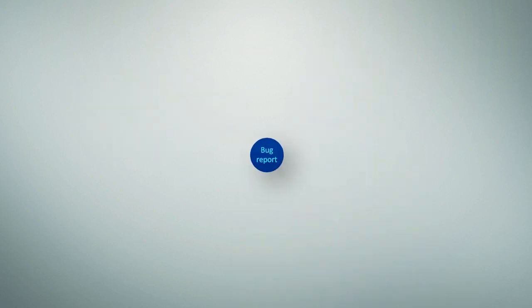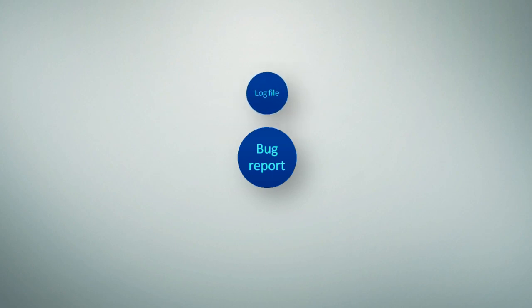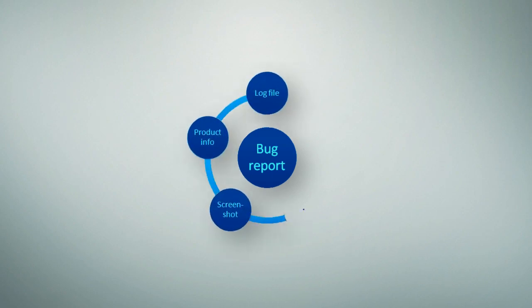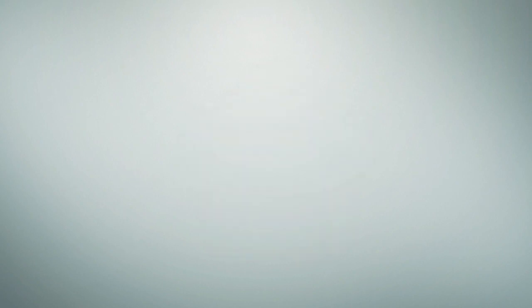Next, you should provide more details about the bug itself. Start with a good title that quickly identifies the bug, and then a description that details the problem, with as much information as possible.